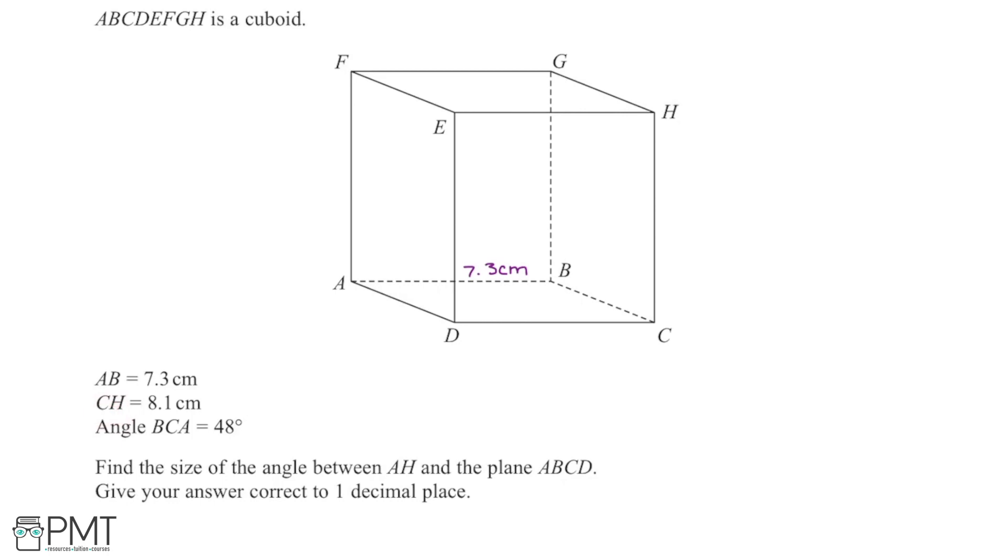Similarly, for CH being 8.1 centimeters, I'm going to label that up. And I also know that ED, FA and GB back here are all 8.1 centimeters also. So it's really important to label up the diagram before we get started with the question, just so we can see exactly what we're working with and visualize these numbers a bit more clearly.